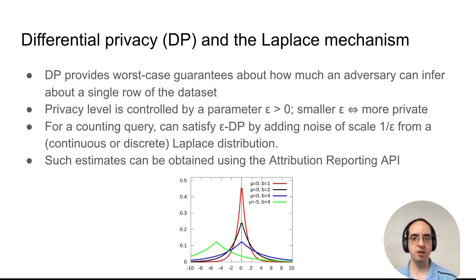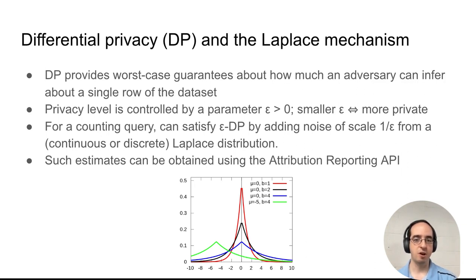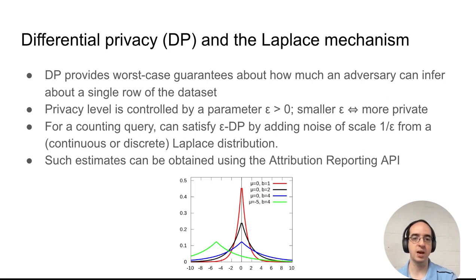For counting queries such as these, we can satisfy epsilon differential privacy by adding noise of scale 1 over epsilon from a Laplace distribution, which can be done using the Attribution Reporting API.